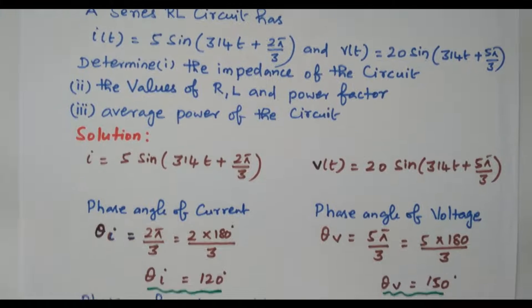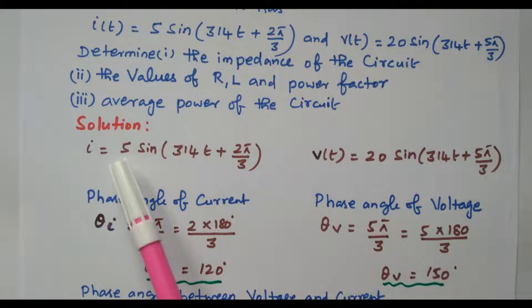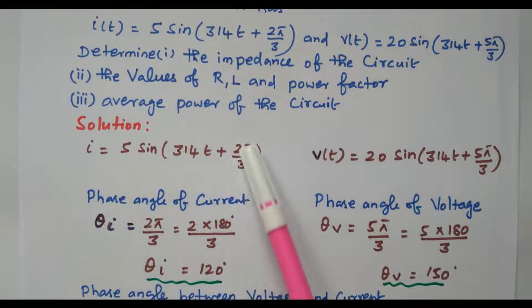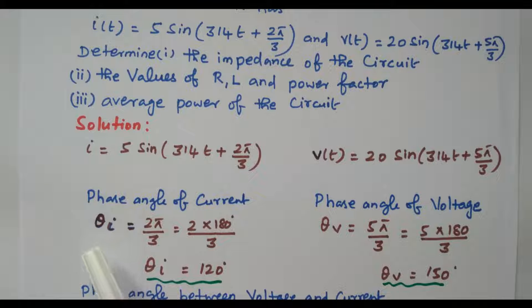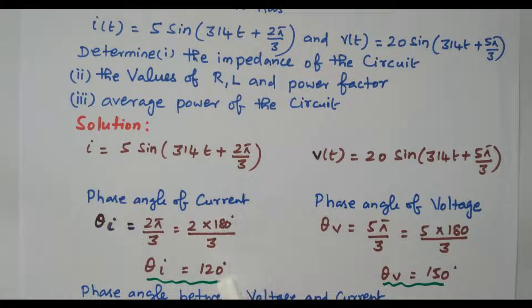Based on the given data, the current equation is 5 sin(314t + 2π/3). So 2π/3 is the phase angle of current. That is 2 × 180/3 = 120 degrees. So the phase angle of current is 120 degrees.